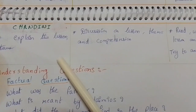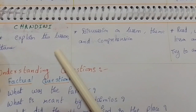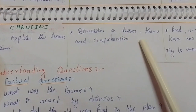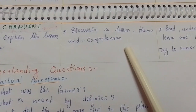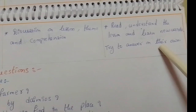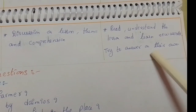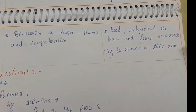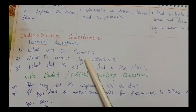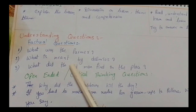Students learn new words, read the poem with correct pronunciation, and recite the poem for pleasure. For the supplementary reader Chandini, I explain the lesson theme and discuss comprehension. Students read and understand the lesson, learn new words, and try to answer on their own.